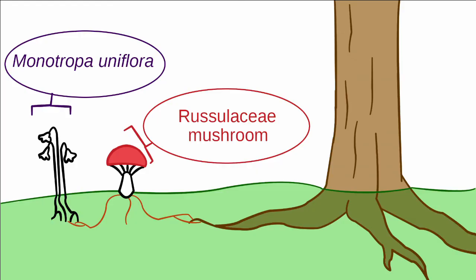Monotropa uniflora is associated with fungi in the Russulaceae family, and it is parasitic on the fungus. So while this ectomycorrhizal fungus is still providing the tree with key nutrients in exchange for carbon, the Monotropa uniflora plant is taking some of that carbon for energy, since it lacks the chlorophyll to get its own from the sun.